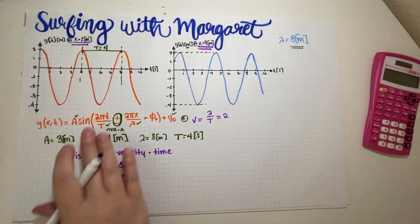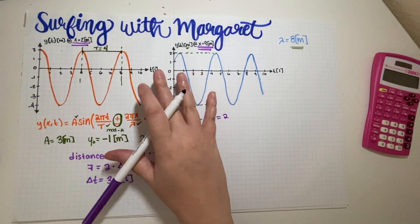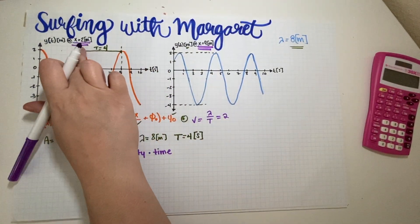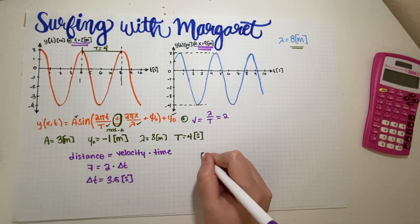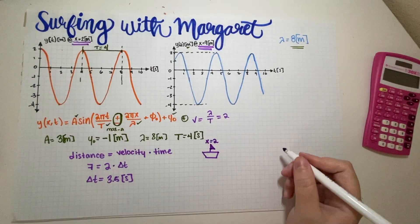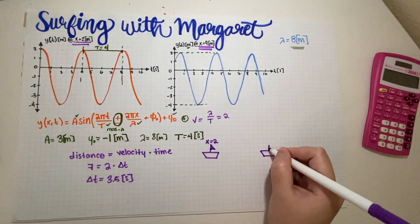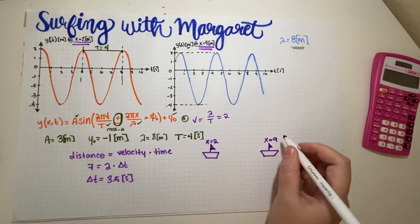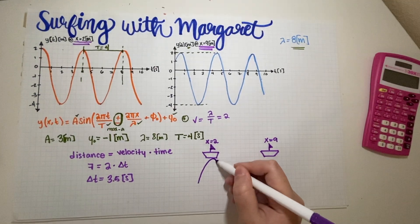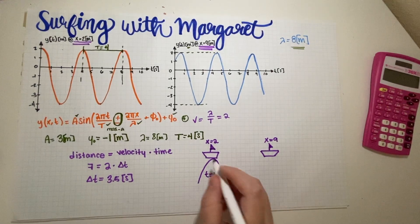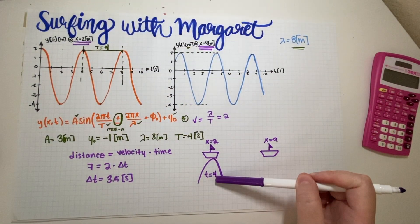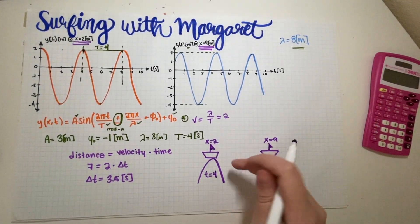Time graphs can be a little difficult to visualize, so let's think about it this way. Imagine a little chip sitting at x=2 and another at x=9. At t=4, the chip at x=2 is at a maximum — it's at a crest. Now there are two possibilities for how this crest relates to the chip at x=9.